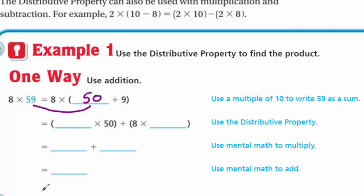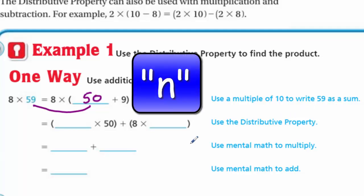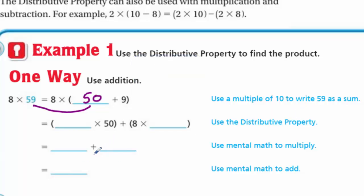One way, use addition. So we have 8 times 59. And it says that's equal to 8 times, look we have a blank plus 9. Hmm. Could I possibly just say, you know what, that is the same as just putting a 50 in there? Because 50 plus 9 is 59. Okay, so I've kind of made that match. Woo-hoo! Now it looks like we're using... Oh here it says, oh I didn't even look at this. Use a multiple of 10 to write 59 as a sum. Okay, a multiple of 10 and that's what we did. A multiple of 10 means 10, 20, 30, right? Now it says use the distributive property. Cool. All right, so we're going to have something times 50.